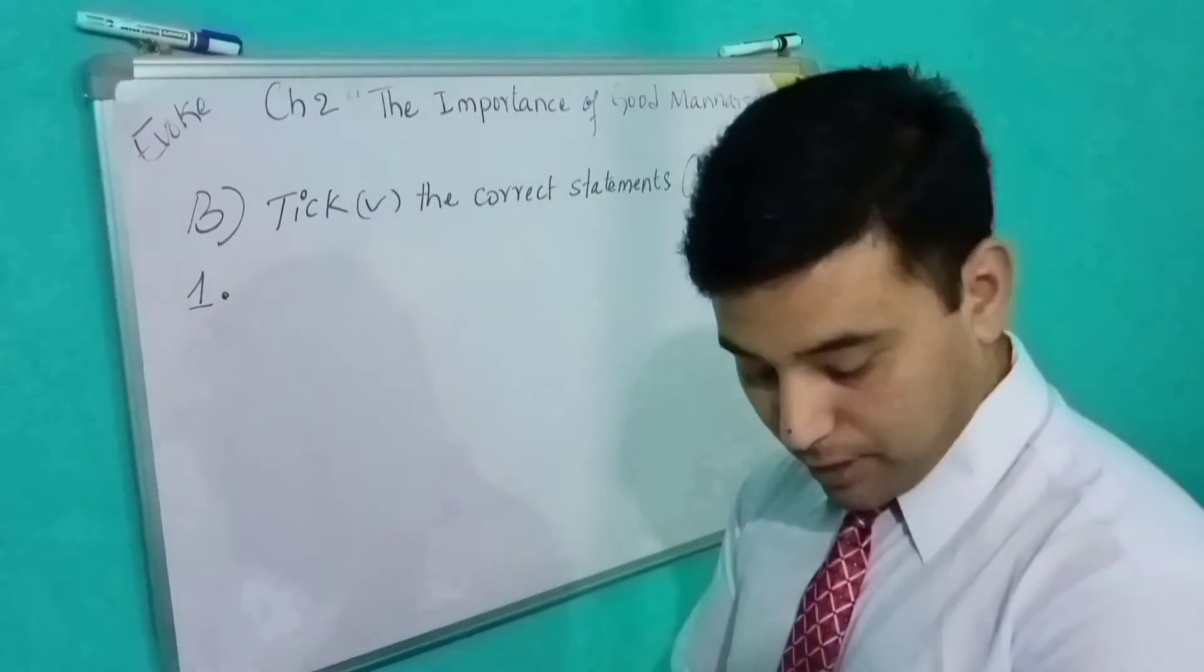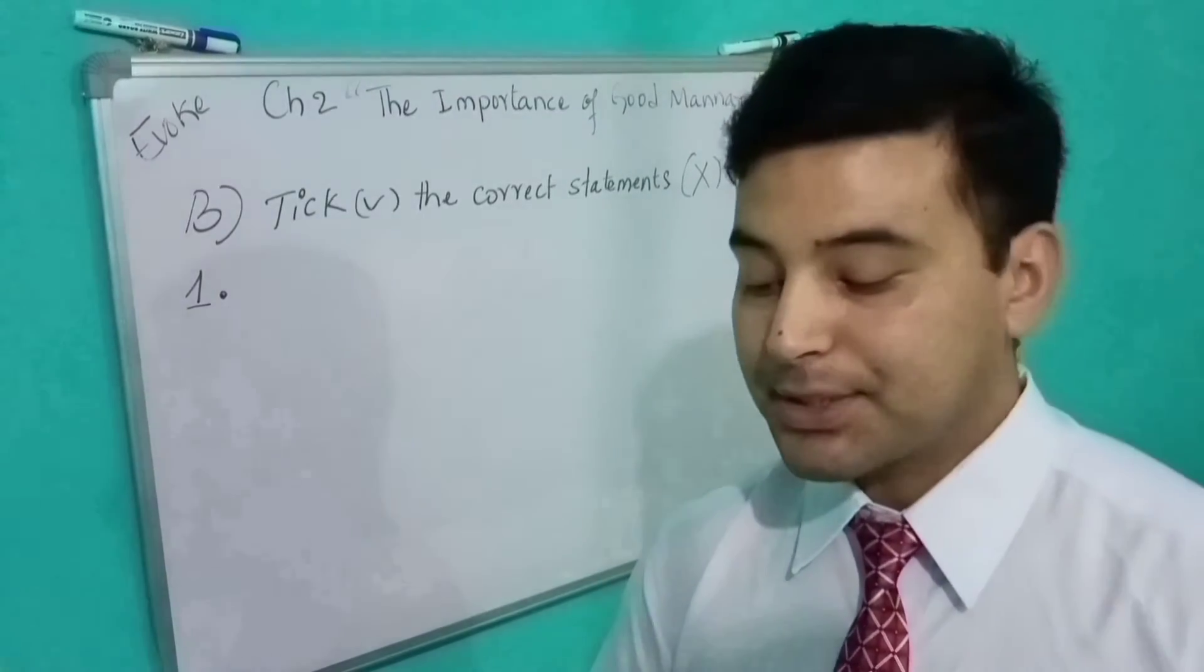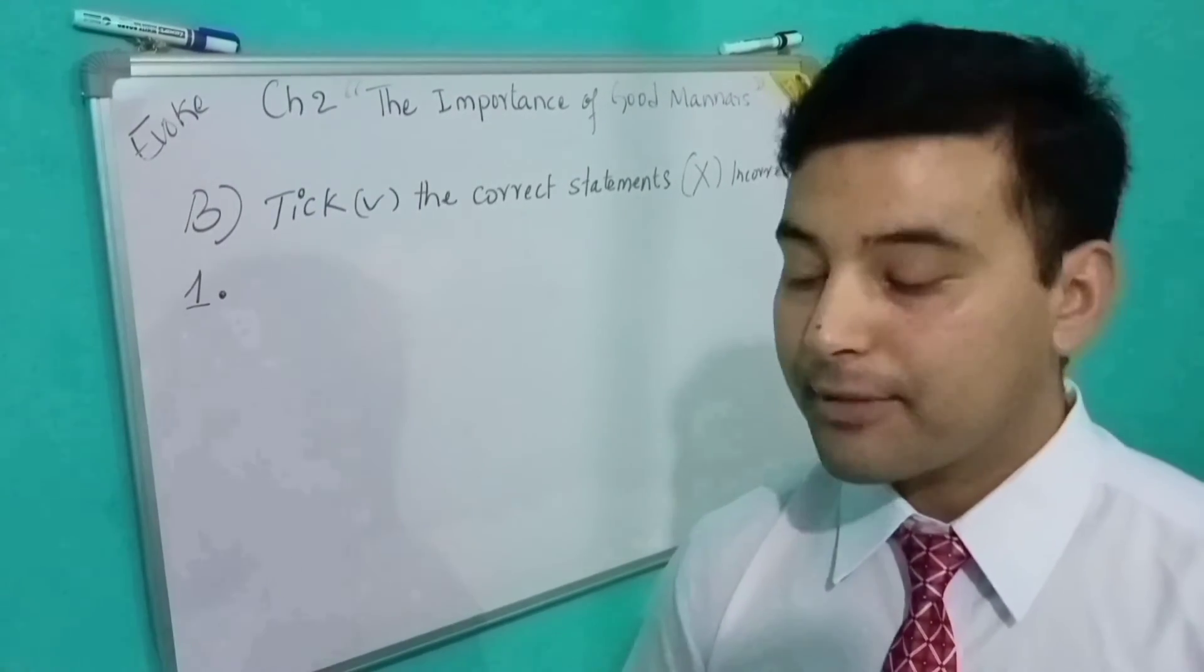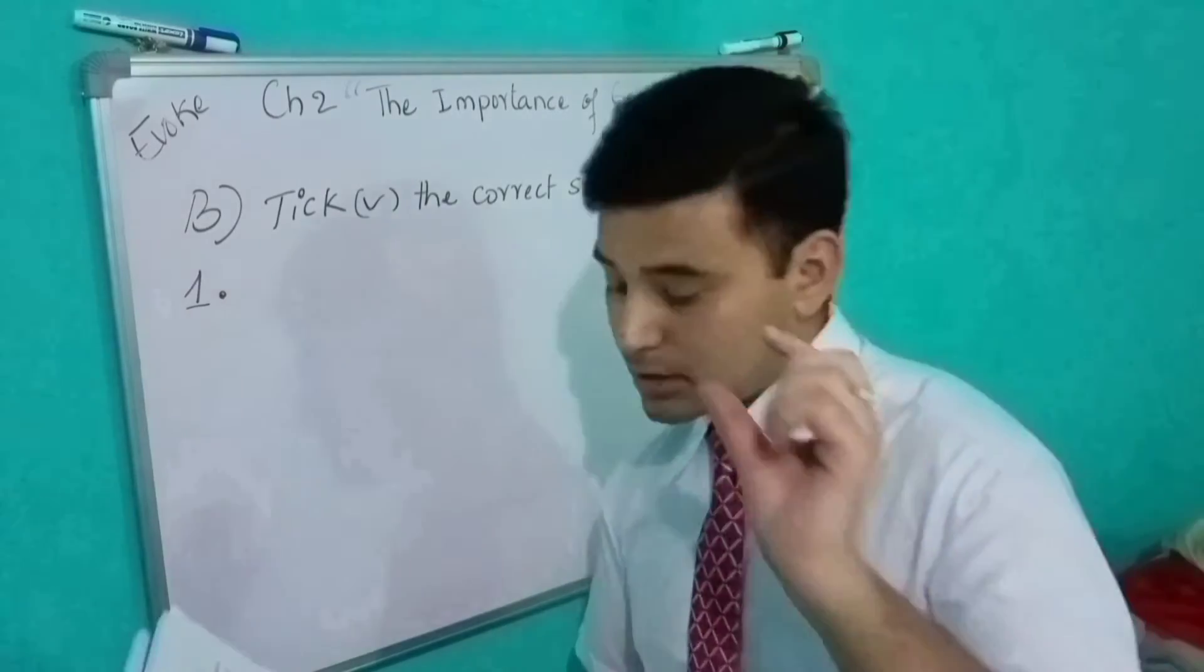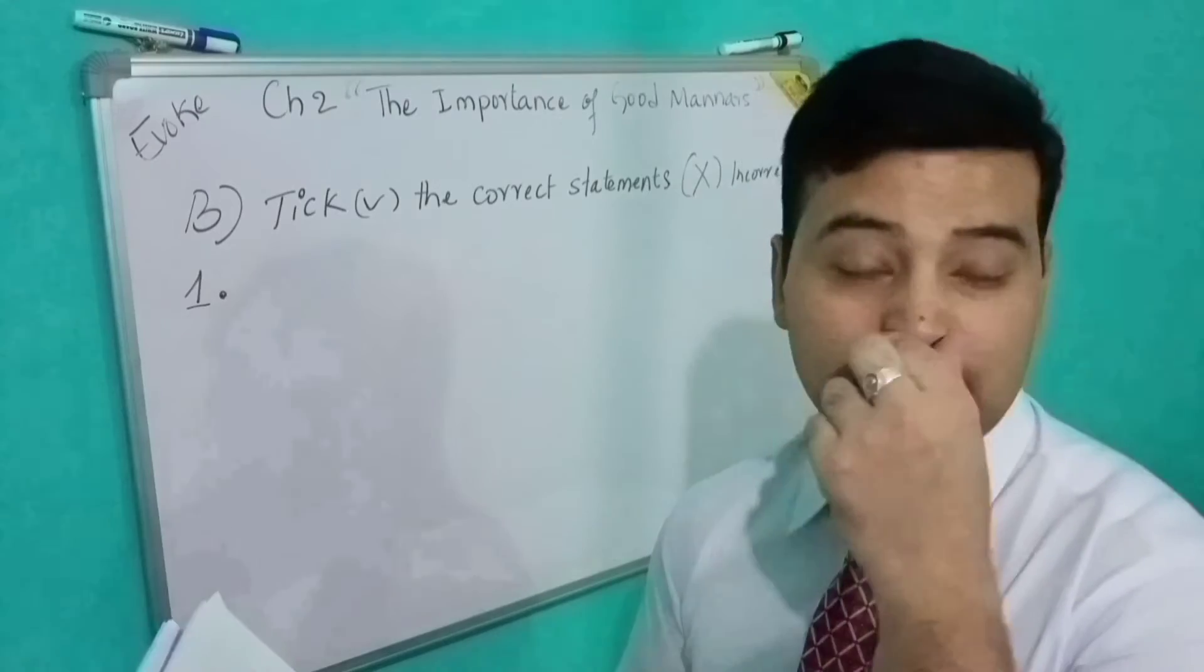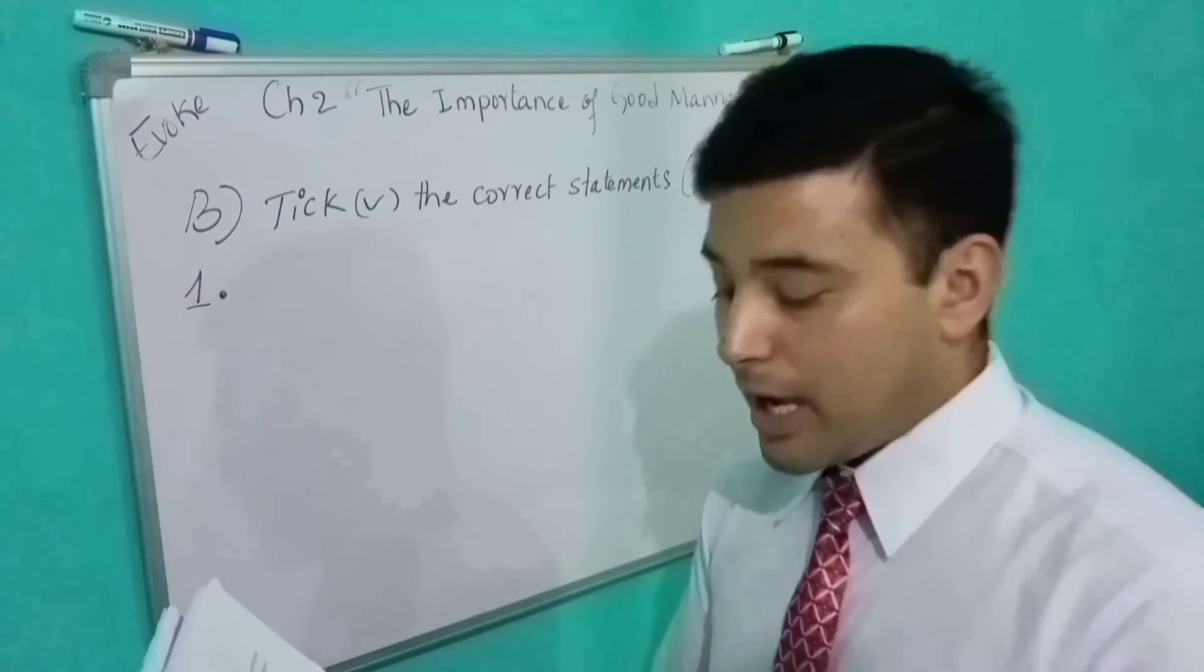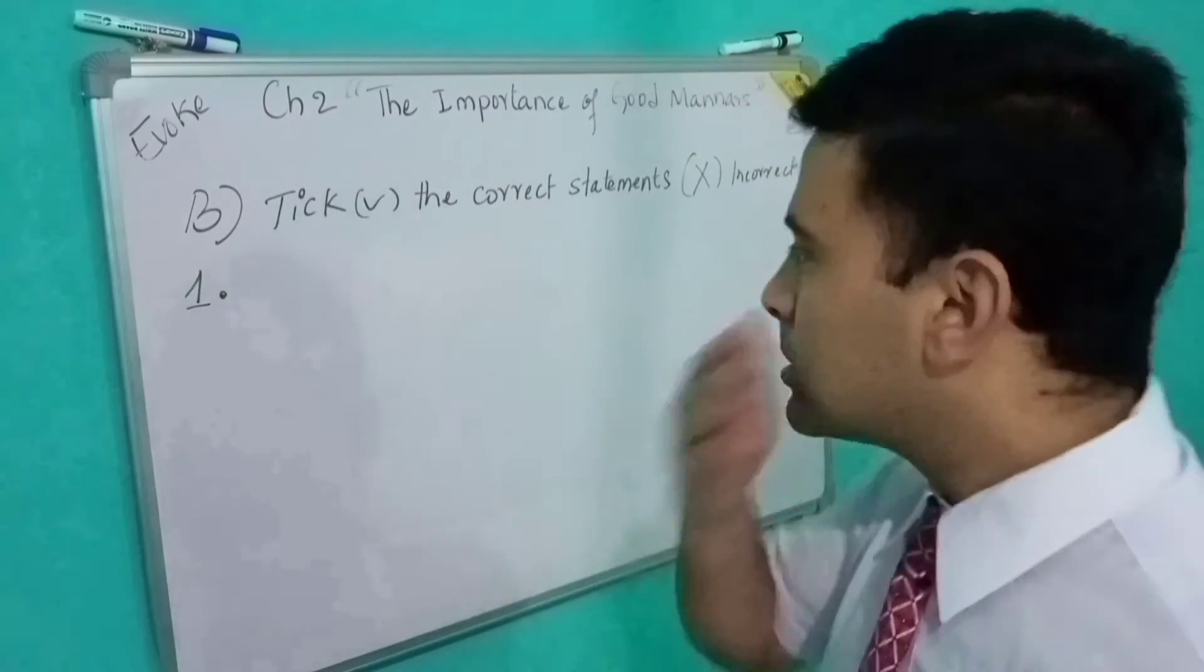Now students, move forward towards B exercise. We have completed the first one, tick the correct option. Now you have to do B: tick the correct statement and cross the incorrect statements.